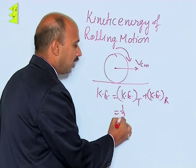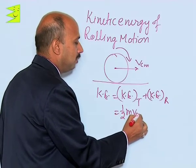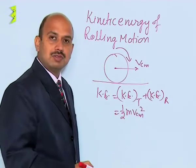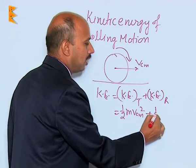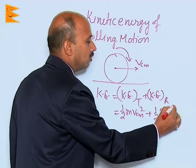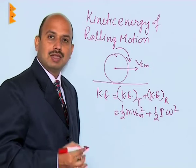So we can write here half m v_cm squared, that is the velocity of the center of mass, plus half I omega squared, where I is the moment of inertia.